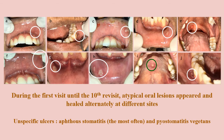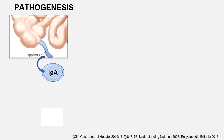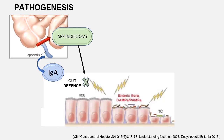During the first visit through the 10th revisit, atypical oral lesions appeared and healed alternately at different sites. Apthous stomatitis is marked by white circles and stomatitis vegetans is marked by green circles. Regarding pathogenesis, the appendix produces IgA to defend against pathogenic microorganisms. Appendectomy causes a decrease and impaired immune balance in the intestinal mucosa, resulting in changes in the intestinal flora.